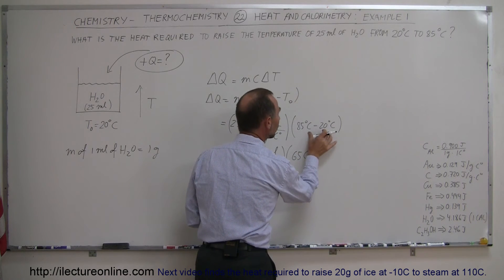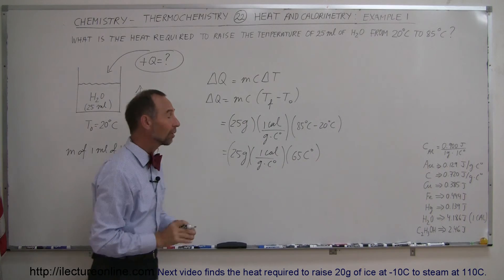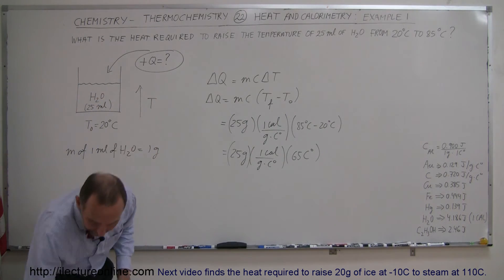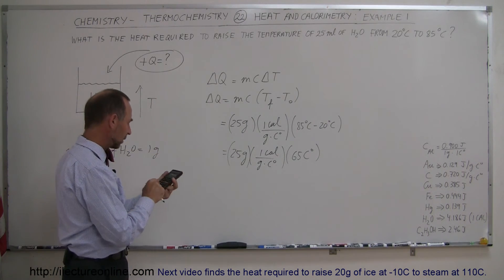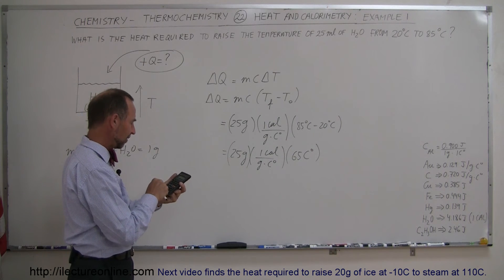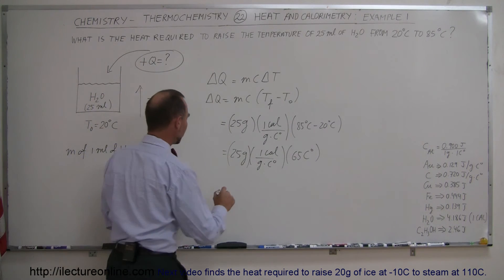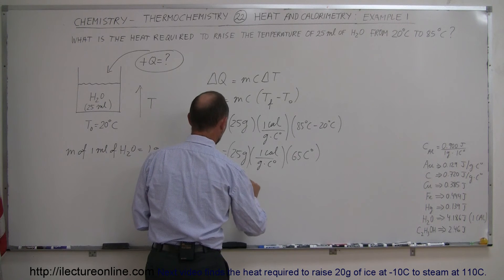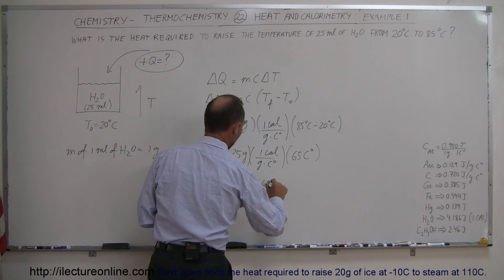That's the difference between two temperatures, so don't write degrees centigrade. That's a more proper way of writing it. Now grabbing my calculator, I can go 25 times 65 is 1,625, so this will require 1,625 calories.